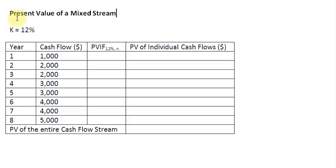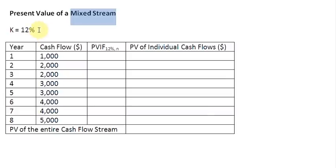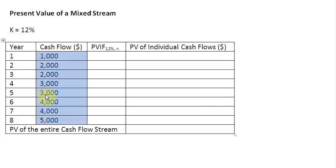Ladies and gentlemen, welcome to this screencast in which we are going to see how to find out the present value of a mixed stream of cash flows. We have some data about cash flows and an estimate of the discount rate, which is 12%. We have cash flow information for 8 years. If you look at this stream of cash flows, you will realize this is a mixed stream because the cash flow for each period is different.